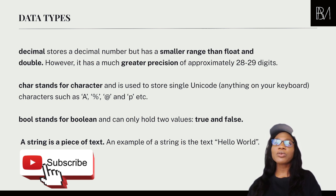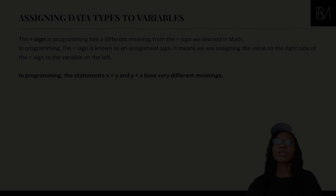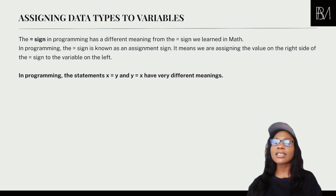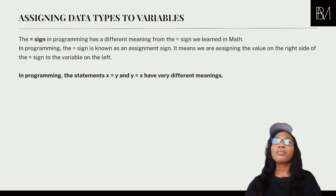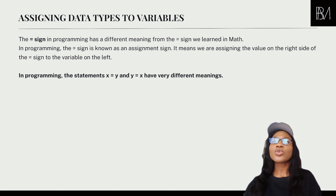So how do you assign data types to variables? We've seen the different data types — char, string, float — and we said that variables are containers. In programming you use the equal sign, which is different from math. It's not 'equals' as in a result; it's 'equals' as in the data on the right is being assigned to the data on the left. The value on the right is always being assigned to the value on the left.